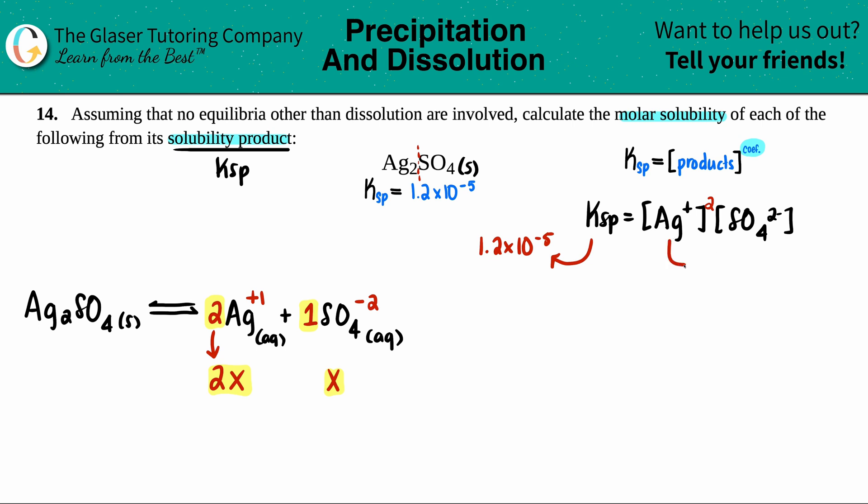So Ag is going to be 2x, and SO4 is going to just be x. Okay, let's go for it. 1.2 times 10 to the negative fifth equals I have 2x. That one has to be squared times x. Let's figure out what 2x squared is. Remember, squaring just means that you have two of the same thing multiplied by each other. So in this case, you have 2x times 2x.